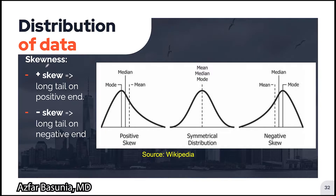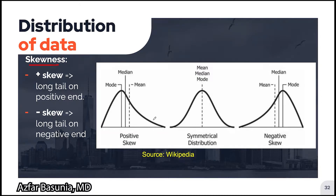Next, let's talk about skewness. A normal distribution should have a nice symmetric bell-shaped curve, where the mean, the median, and the mode lie on top of one another in the middle of the curve. Extreme values or outliers pull the tail of the graph towards them, creating a skewed distribution.